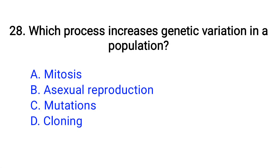Question number 28. Which process increases genetic variation in a population? Option A: Mitosis, B: Sexual reproduction, C: Mutation, D: Cloning. The right answer is Option C: Mutation.